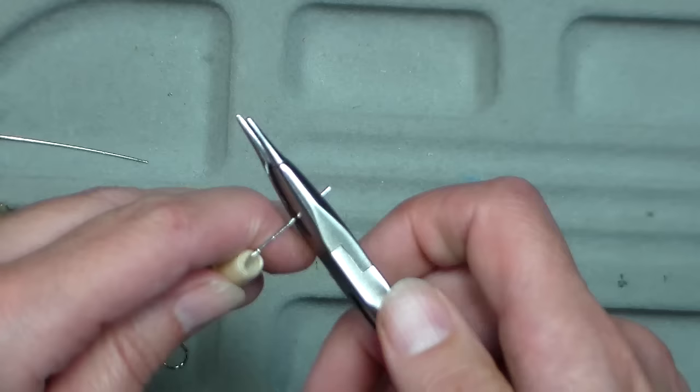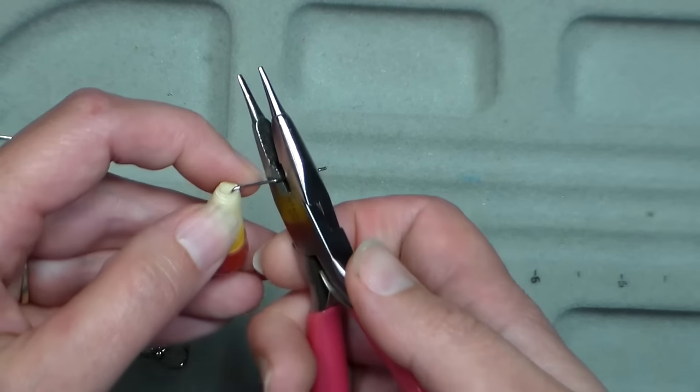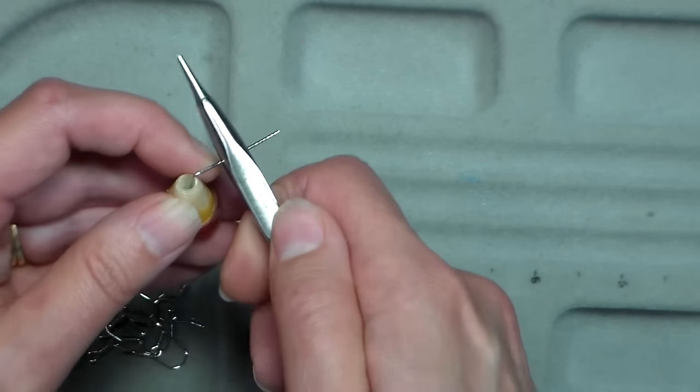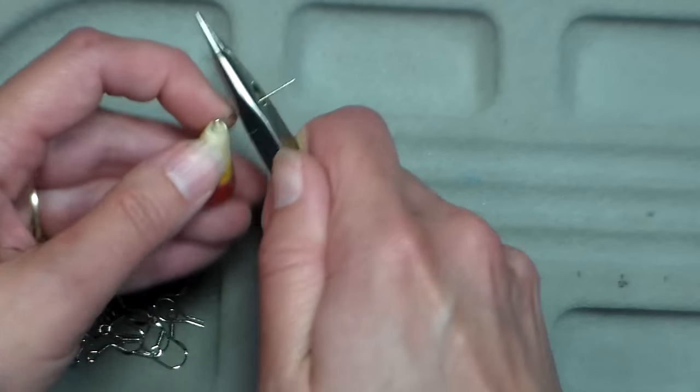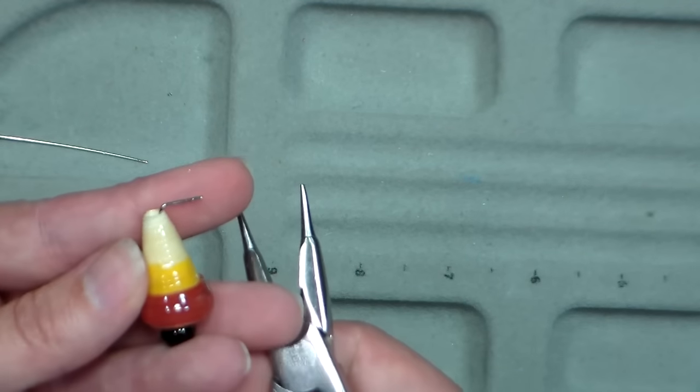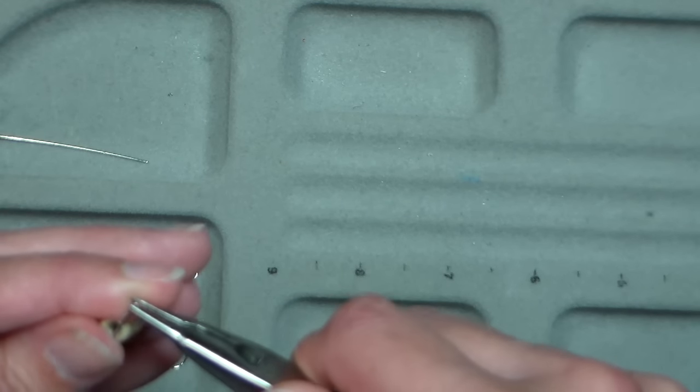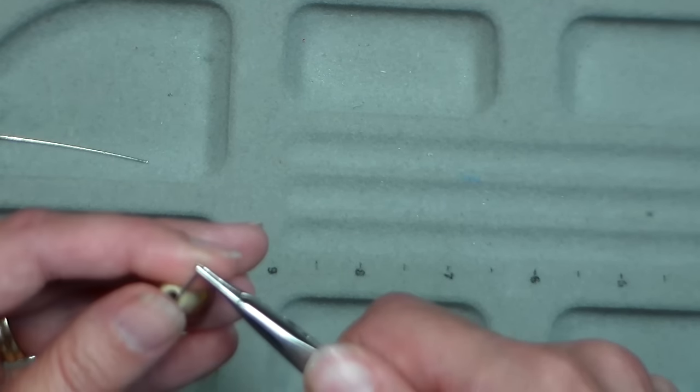Now you're gonna use the cutters on this, and these pliers are like four bucks at Walmart, so they're not crazy expensive. You're gonna cut the wire about a quarter of an inch from that bend. Now you want to grab the tip of that wire between your plier ends. You don't want any sticking out.